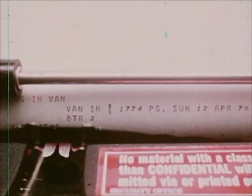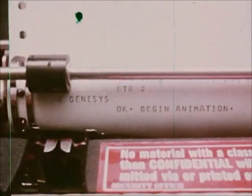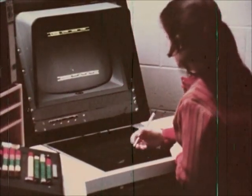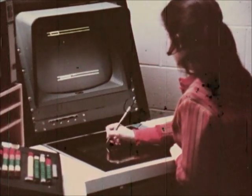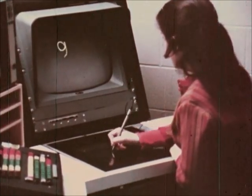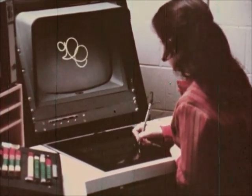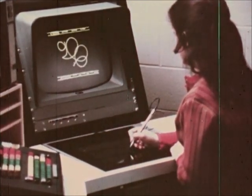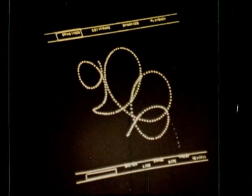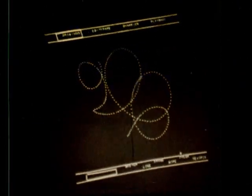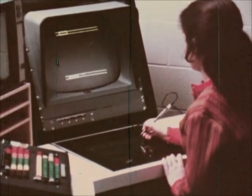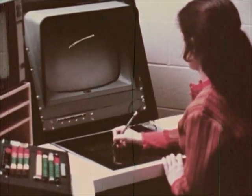Genesis is a computer program which transforms the TX2, a tablet, stylus, and display scope, into an animator. Lynn points with the stylus to the word sketch, which tells Genesis to record her sketching motion. Pointing to another command erases it. No marks are left on the tablet, but all drawings are automatically recorded and filed in the computer memory.